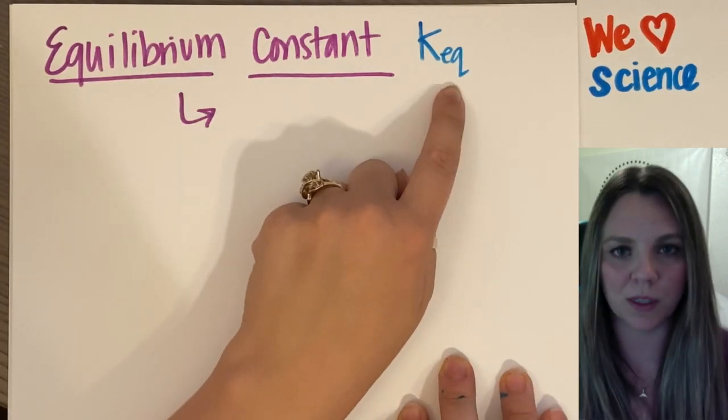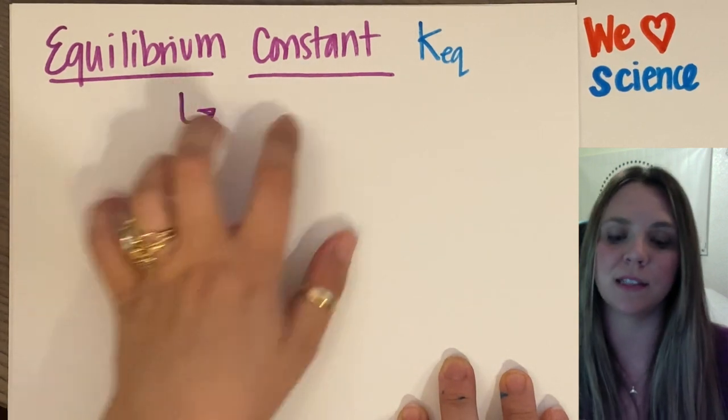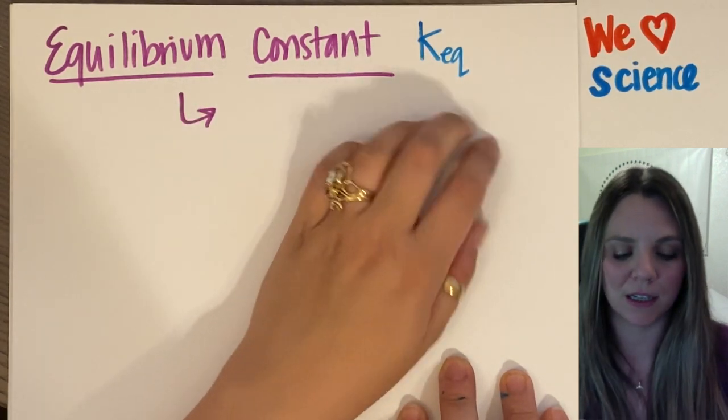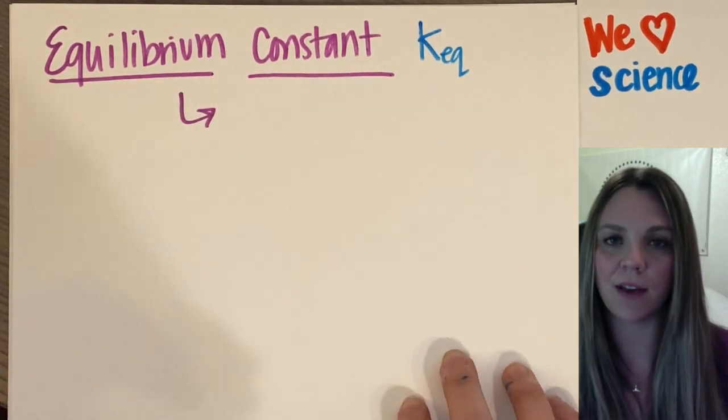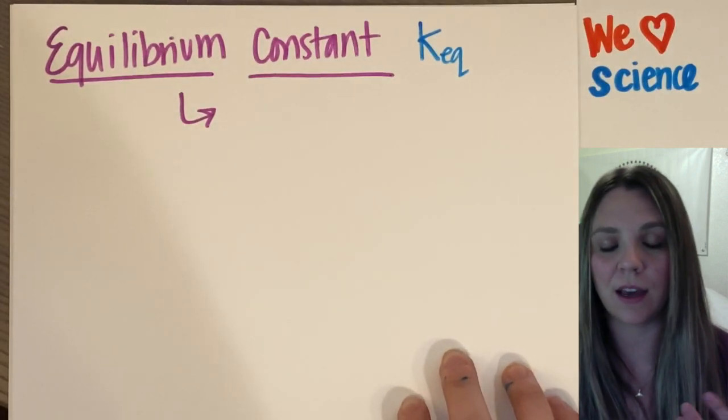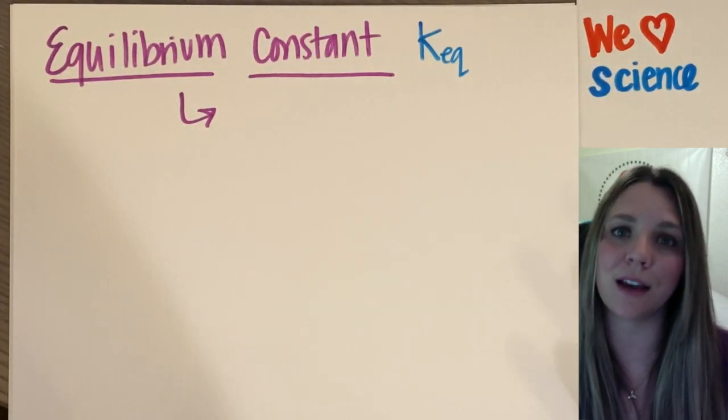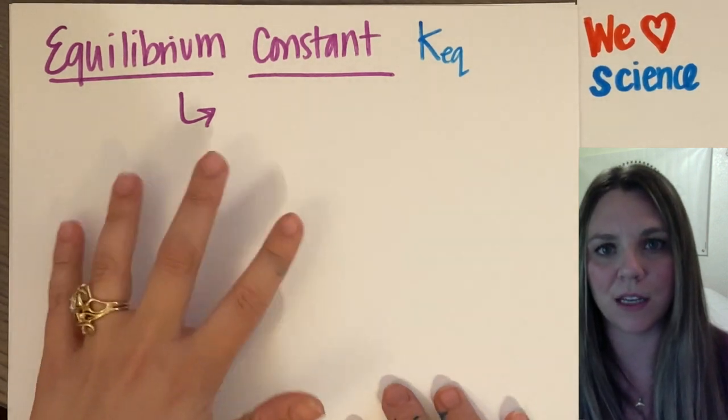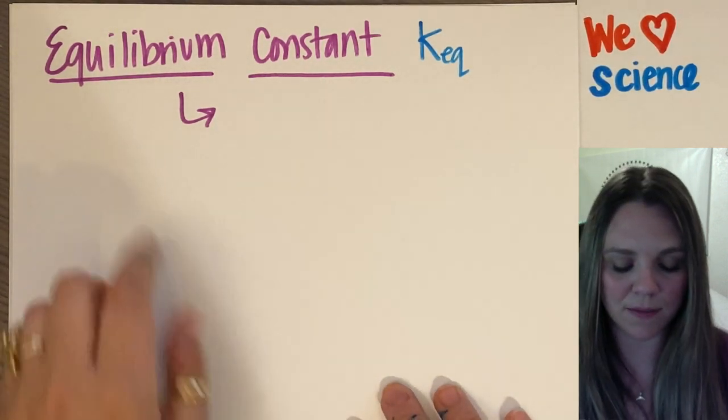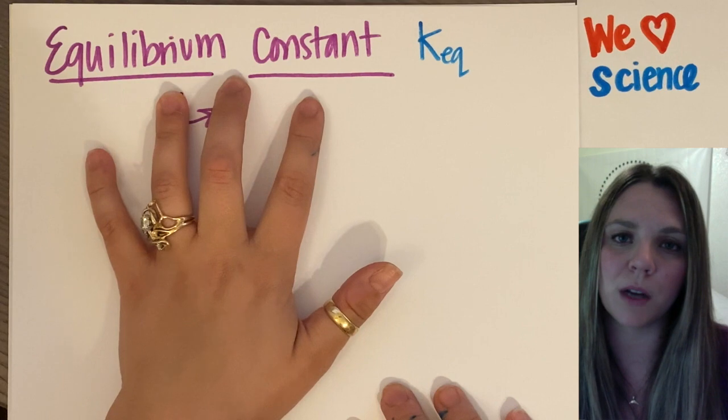K of equilibrium, my equilibrium constant, KEQ. All this means is that when I have an equilibrium reaction, I actually am able to calculate a lot of stuff. It tells me a lot of information when I have an equilibrium reaction.